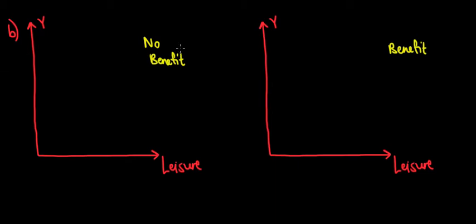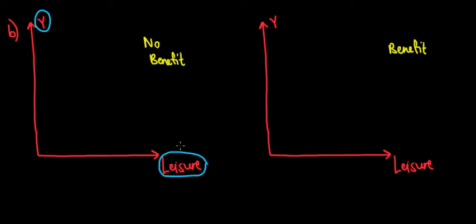Without the 600-euro benefit, what are the intercepts on this axis? We have the income axis — the most money we could make. On the horizontal axis we have leisure, because the 720 hours we have to allocate are split between leisure and work. Maximally, we can have 720 hours of leisure, and in that case we would earn 0 euros.